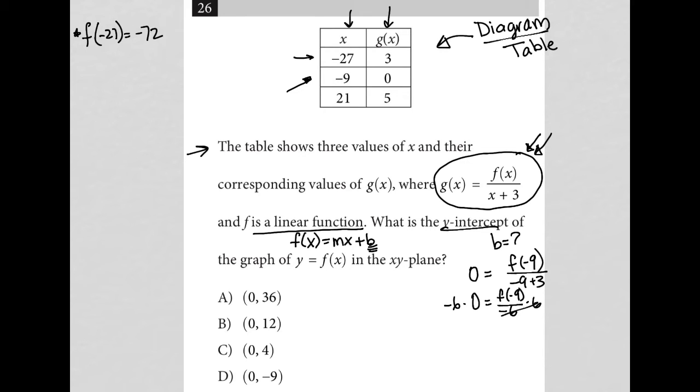And when I multiply both sides by negative 6, I still have 0. So I have 0 equals f of negative 9, meaning f of negative 9 equals 0. Now, I could keep going, but I don't think I have to. And the truth is, I didn't know how any of this would work out until now.